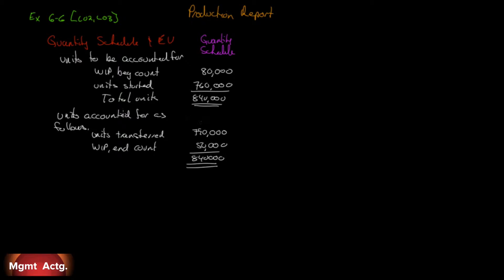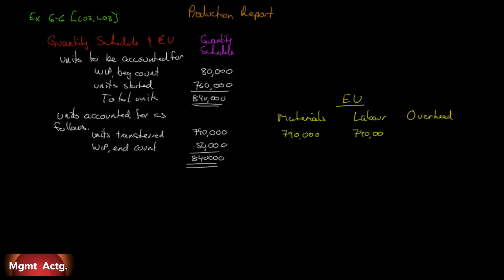Now we're going to do the equivalent units, which are concerned with the units accounted for as follows. We want equivalent units per cost category. We were given three cost categories: materials, labor, and overhead. Of the 790,000 units transferred out, in terms of materials, all of them were done — so we have 790,000 equivalent units. In fact, it's 100% done across the board, so we put 790,000 right across for all three categories.